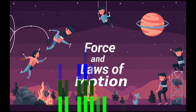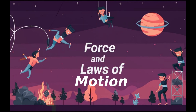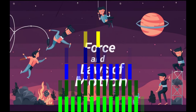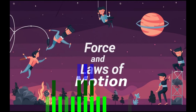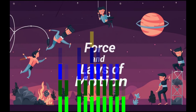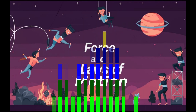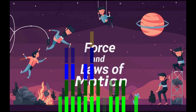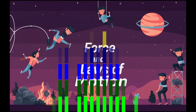There are mainly three types of inertia: inertia of rest, inertia of motion, and inertia of direction. The characteristic of a body to remain at rest is known as inertia of rest. The characteristic of a body to remain in motion is known as inertia of motion. The characteristic of a body to do motion in a certain direction is known as inertia of direction.